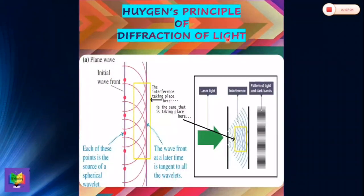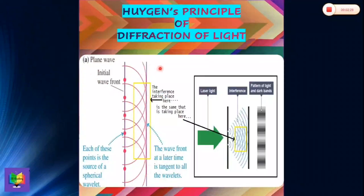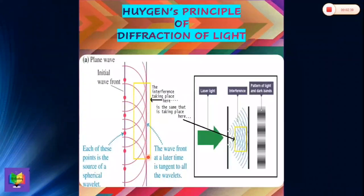Huygens' principle of diffraction of light: according to Huygens' principle, every point on a given wavefront — see this plane wave, every point labeled as a red circular dot — behaves like a source of light and gives rise to secondary wavelets, these small circular waves. They spread out in all directions with the speed of the wave. The new position of the wavefront is determined by drawing a tangent to all the wavelets.